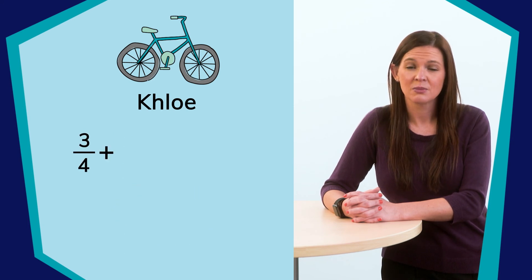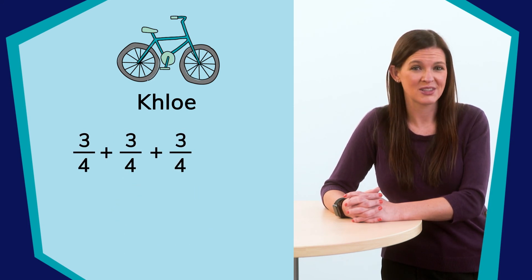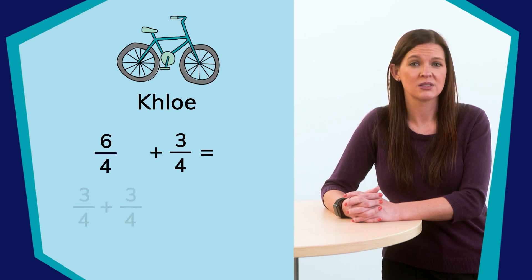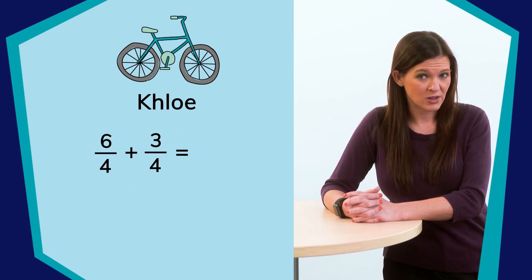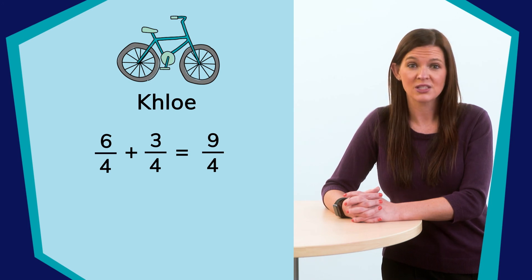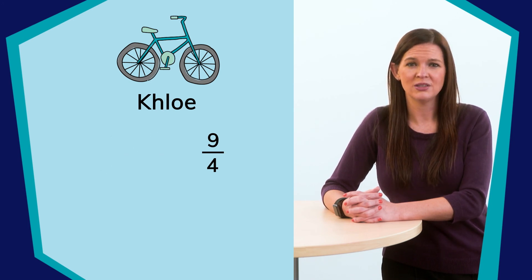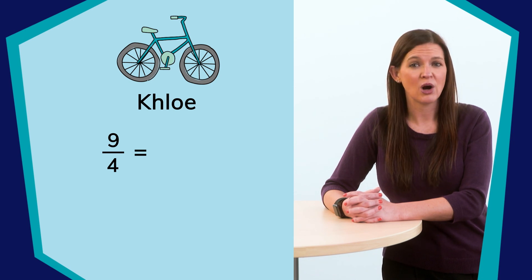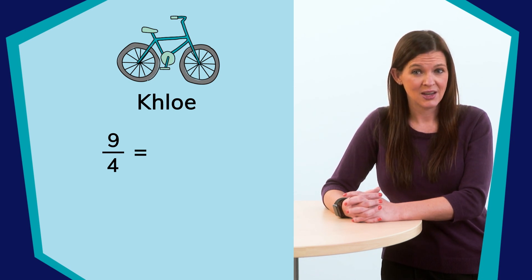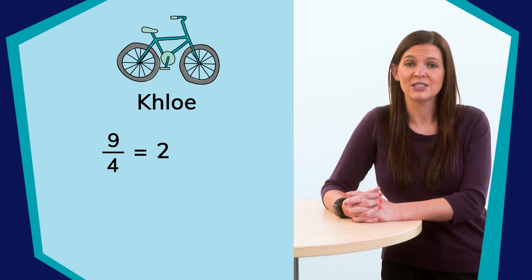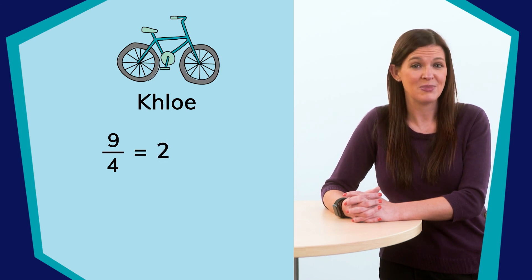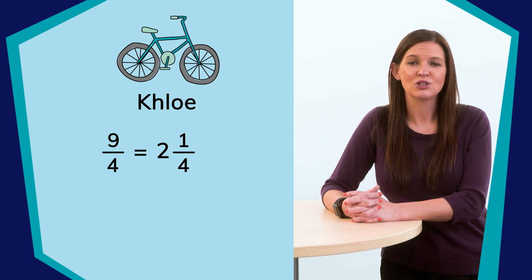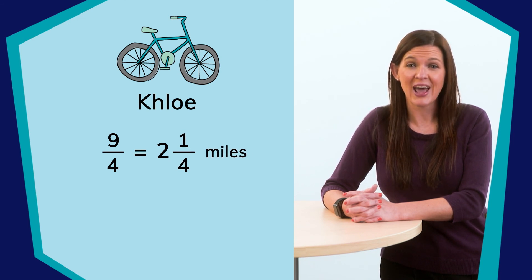Exactly, three-fourths plus three-fourths plus three-fourths. So let's see, three-fourths plus three-fourths is six-fourths, plus another three-fourths, and we have nine-fourths. Well, this is a fraction greater than one, so we will need to make it a mixed number. If four pieces make a whole and I have nine pieces, then I know there are two wholes in this fraction because that would be eight pieces, which would leave one-fourth remaining. So Chloe rode her bike two and one-fourths miles in those three days.